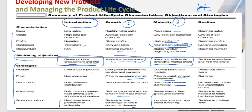In the decline phase, sales decline, cost per customer is low, but profits are also low. The number of competitors declines as well, since the growth of the product is very low in this phase.